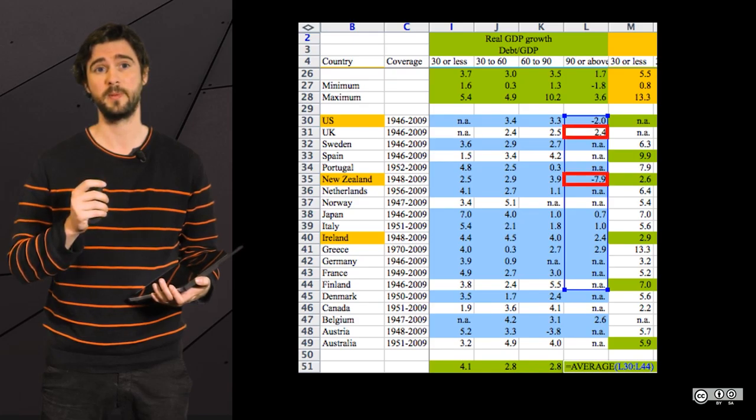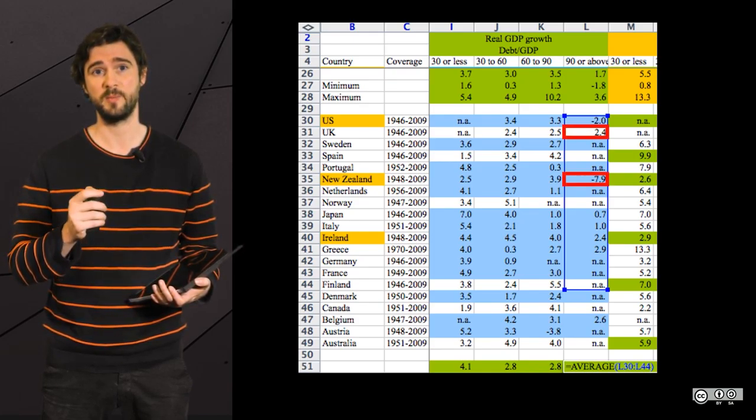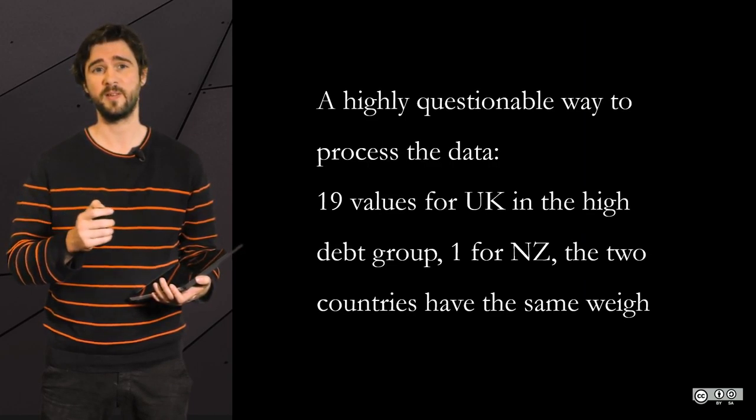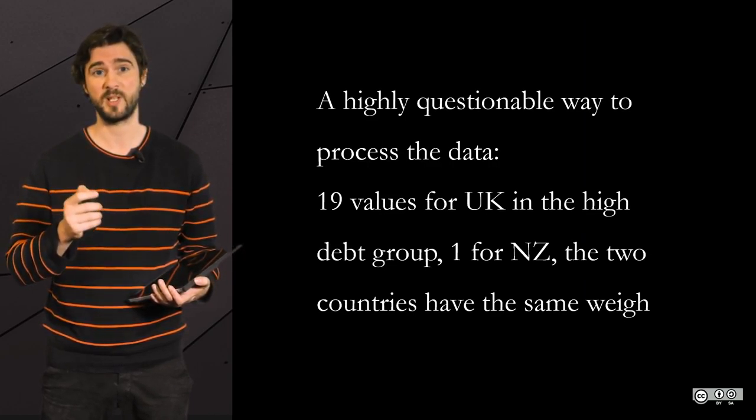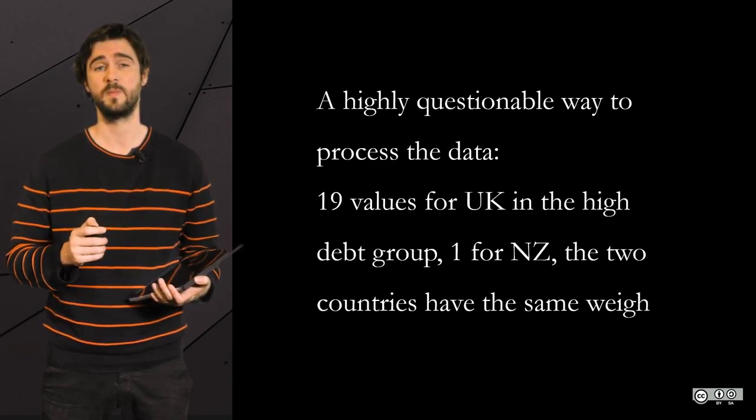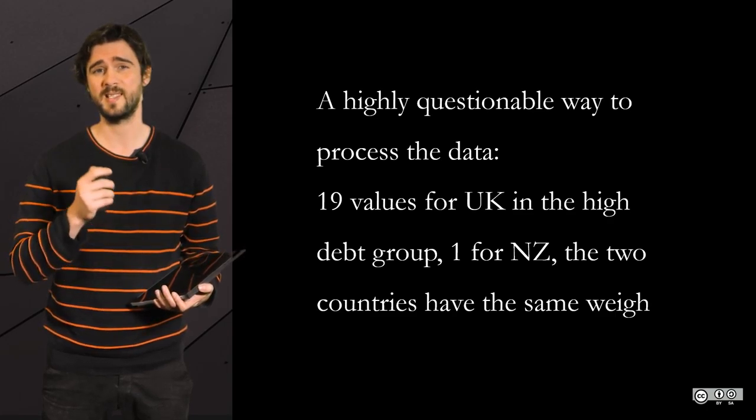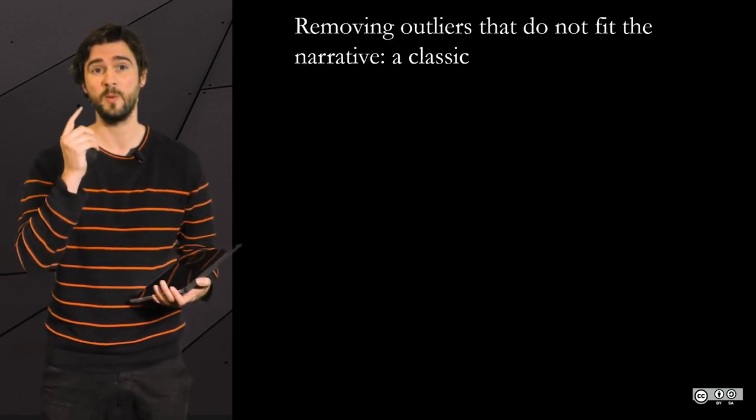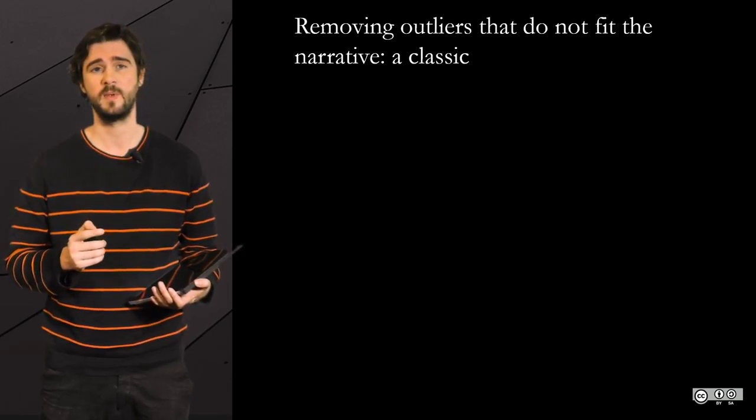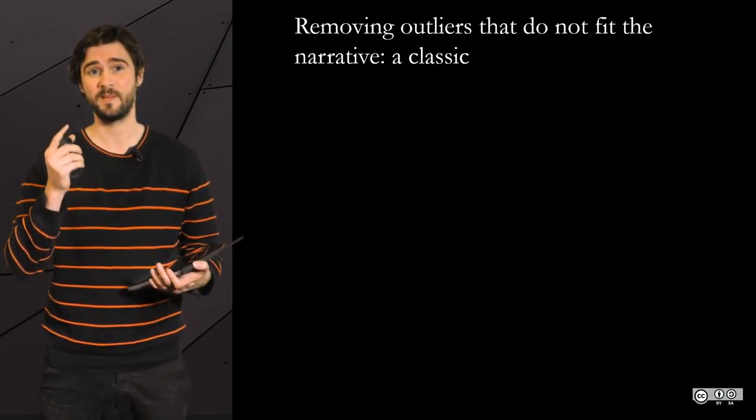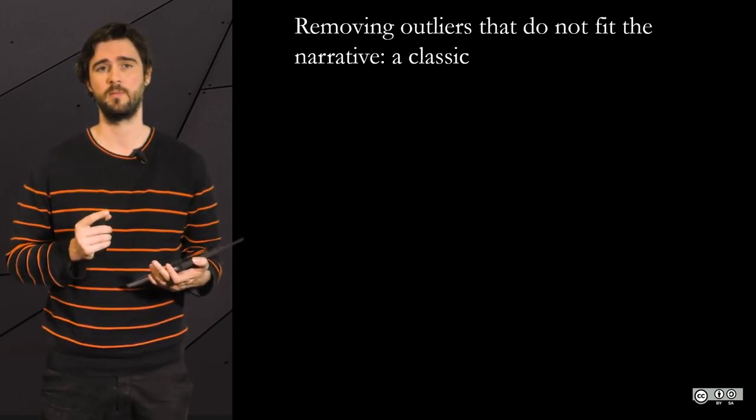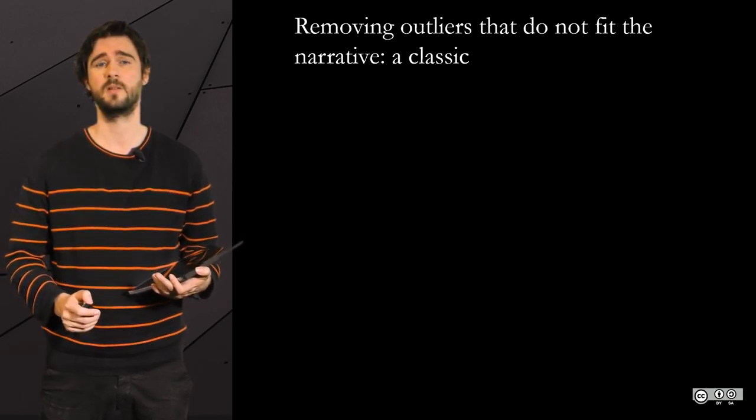For instance, in Growth in the Time of Debt, the authors pulled together some data when they should have refrained to do so. Growth data for the United Kingdom for the high debt category, corresponding to 19 years, were averaged. For New Zealand, who was less often crippled by debt, it corresponded to only one year, with a strong recession in 1951. The data analysis gave the same weight to New Zealand with one point and the UK with 19.